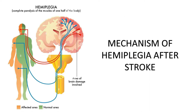Hemiplegia is paralysis of the muscles of the lower face, arm, and leg on one side of the body. In addition to motor problems, other losses may occur, for example sensation, memory, and cognition.